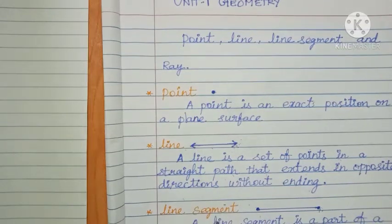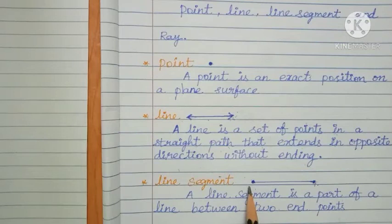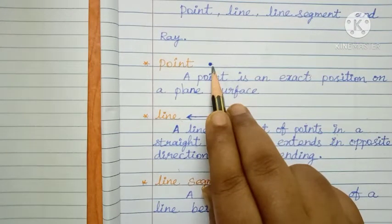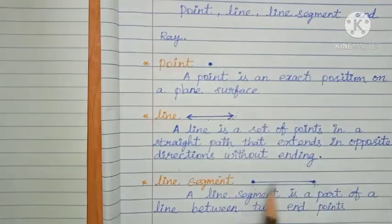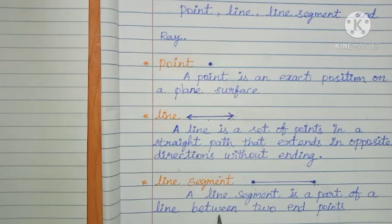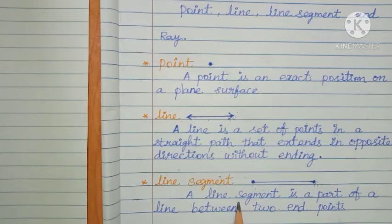Then next: line segment. A line segment has points — you already studied this. The point is used on both sides. A line segment is a part of a line between two endpoints — here and there. One and two endpoints. That is why this is called a line segment.